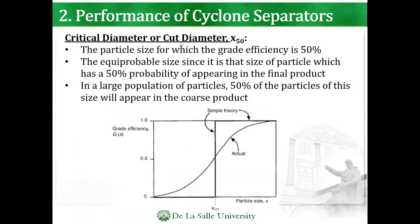Some key properties: the critical diameter, or what you call the cut diameter at 50, means the particle size for which the grade efficiency is 50%. So if it's at 50%, that's the critical diameter. The critical diameter is found at grade efficiency 50.